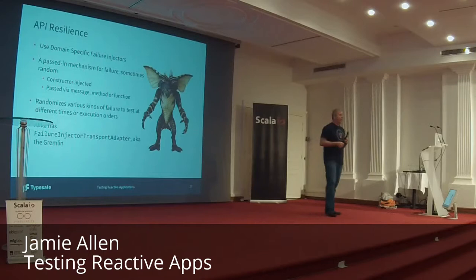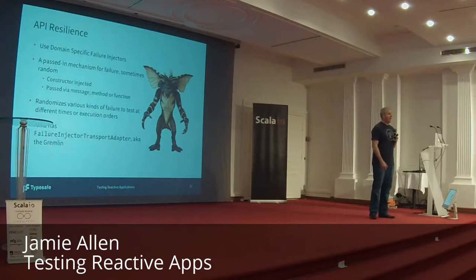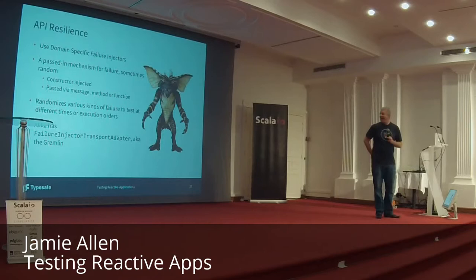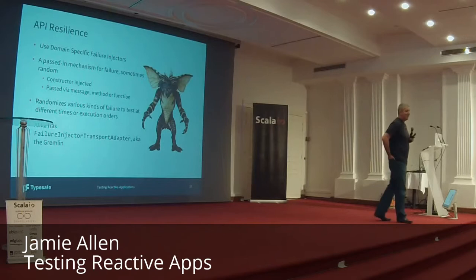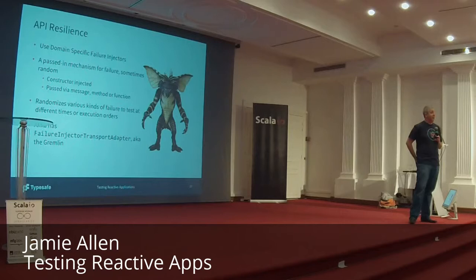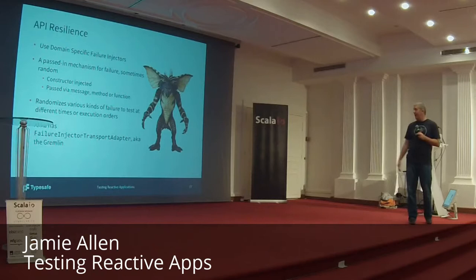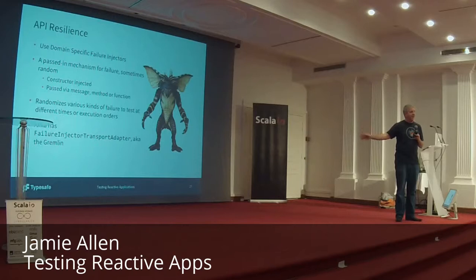So, API resilience. Inside Akka, one of the things they're trying to do is randomize the sort of things that can go wrong inside their tests. They've created something called the failure injector transport adapter, which they call the Gremlin. The Gremlin's job is to go around and wreak havoc in a random fashion so that they can test things they never expected. Having these kinds of tools really helps you build reactive tests.